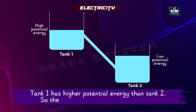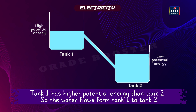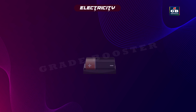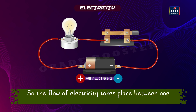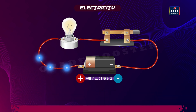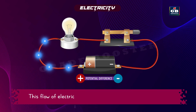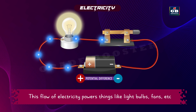Tank 1 has higher potential energy than tank 2, so the water flows from tank 1 to tank 2. In the same way, a potential difference exists between the positive and negative poles of a cell, so the flow of electricity takes place between one pole to another. This flow of electricity powers things like light bulbs, fans, etc.